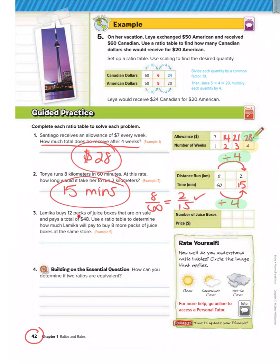Number 3, Lameca buys 12 packs of juice boxes that are on sale and pays a total of $48. Use a ratio table to determine how much Lameca will pay to buy 8 more packs of juice boxes at the same store. So we have to fill in the table ourselves. So 12 packs of juice is $48. We want to know how much will it cost her to buy 8 packs.